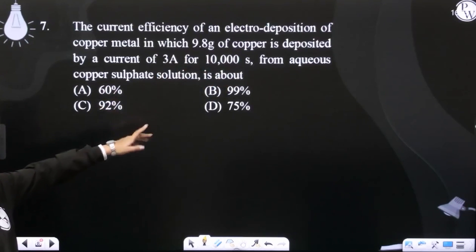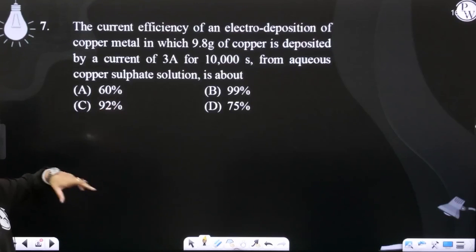And how much copper is deposited? 9.8 grams. So, the amount of copper that should be deposited divided by the actual amount deposited, multiplied by 100 is basically what efficiency is.